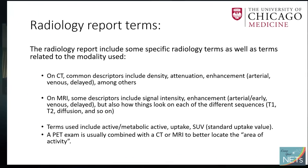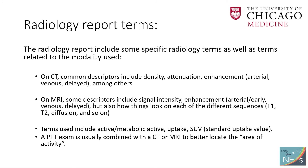In order to understand your report, you need to know some radiology terms. In CT, common descriptors include density — the tone or attenuation of gray — and enhancement, meaning the amount of contrast that goes into an organ or lesion, timed in arterial, venous, or delayed phases. In MRI, descriptors include signal intensity, enhancement, and how things look on different sequences labeled T1, T2, diffusion, and so on. Terms used in PET include 'active,' 'metabolically active,' 'uptake,' or SUV — standard uptake value. A PET exam is usually combined with CT or MR to better locate the area of activity.